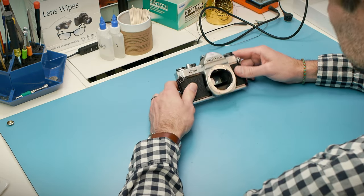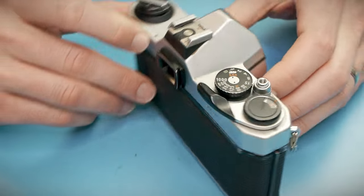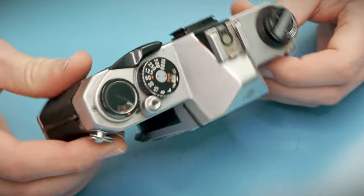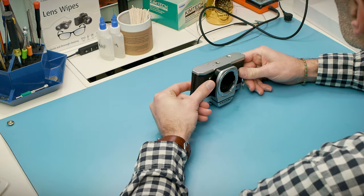On the bench today is a Pentax K1000, a most iconic 35mm film camera. I'm going to take a quick look at the camera, see if it's operating normally, assess the performance of the shutter and the light meter, and then see where I need to go from there.